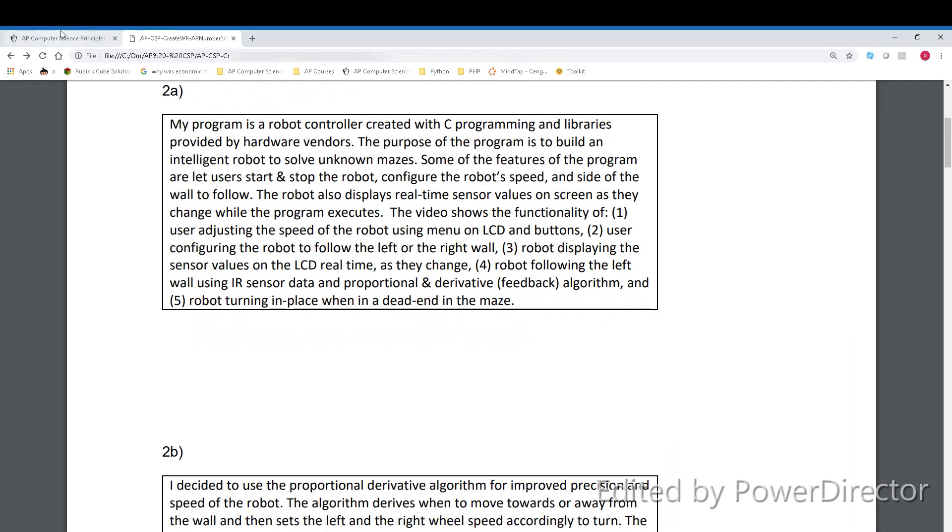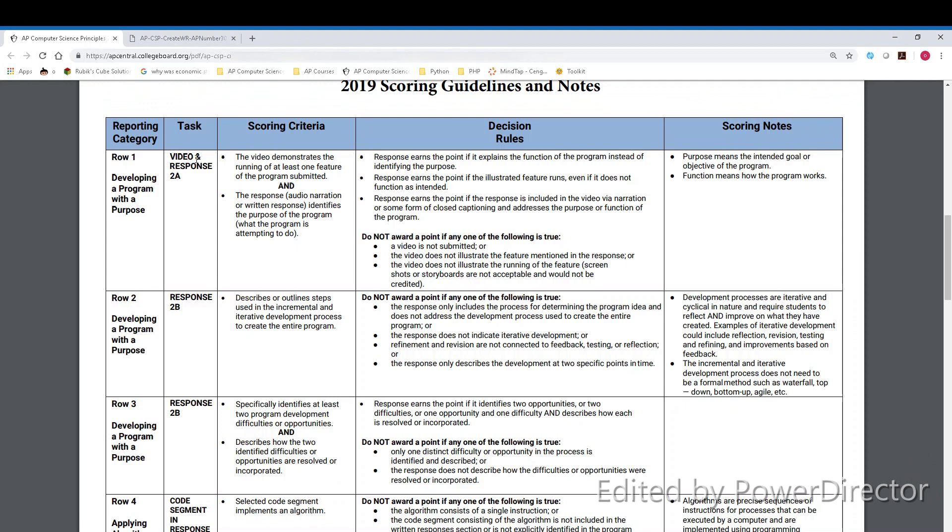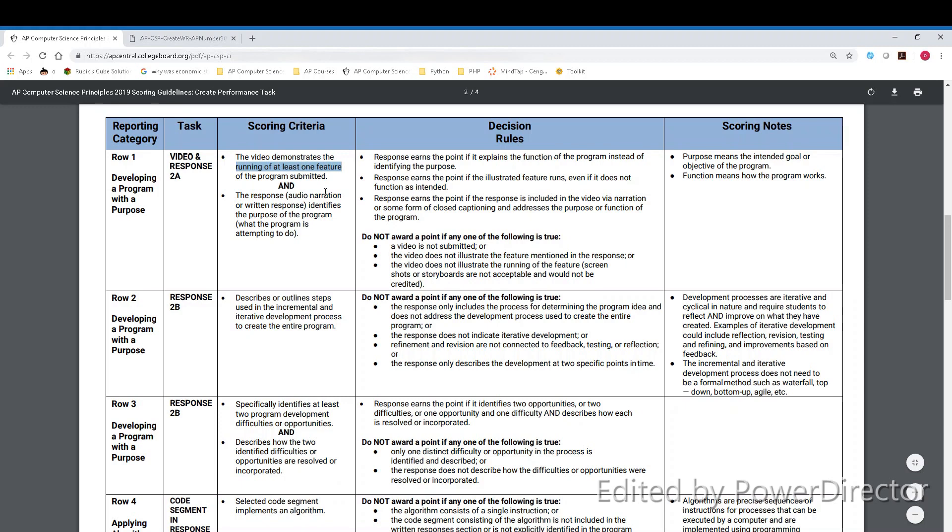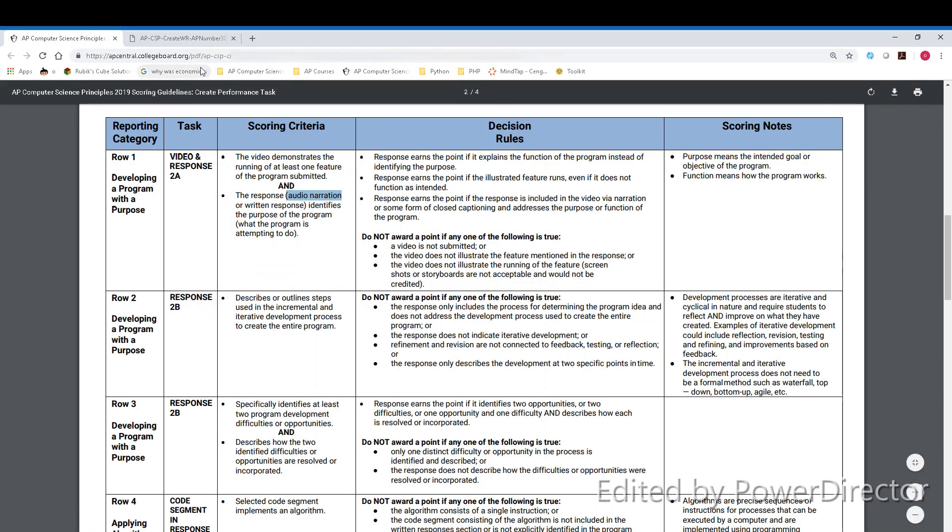The first response is 2a, and the goal of this is that the video should demonstrate the running of at least one feature. If you remember from the video, it did demonstrate the robot. It demonstrated me pressing the buttons on the robot, and it's showing different things, showing at least one feature running. The audio narration should also identify the purpose of the program. The audio narration does identify the purpose of the program, and my response for 2a also identifies the purpose of the program, saying that the purpose is to build an intelligent robot to solve unknown mazes. Including this purpose in the audio narration and the written response gets me a point. You don't have to include it in both, I just included it in both just to be safe.